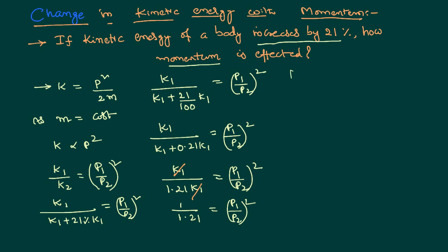Then I can write p1 by p2 equal to square root of 1 by 1.21. That implies p1 by p2 equal to 1.21 is nothing but equal to 1 by 1.1.